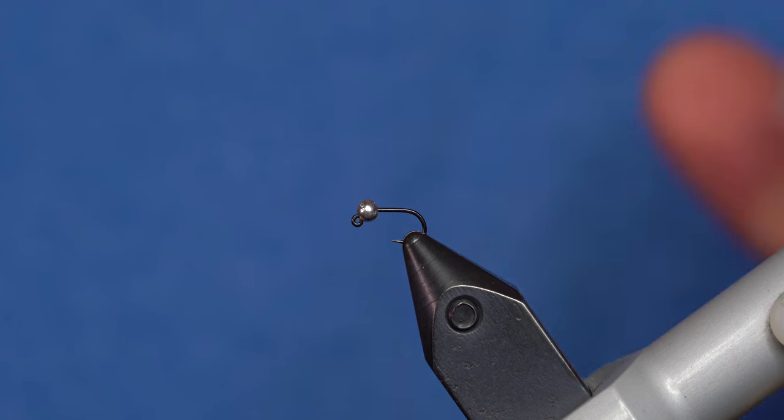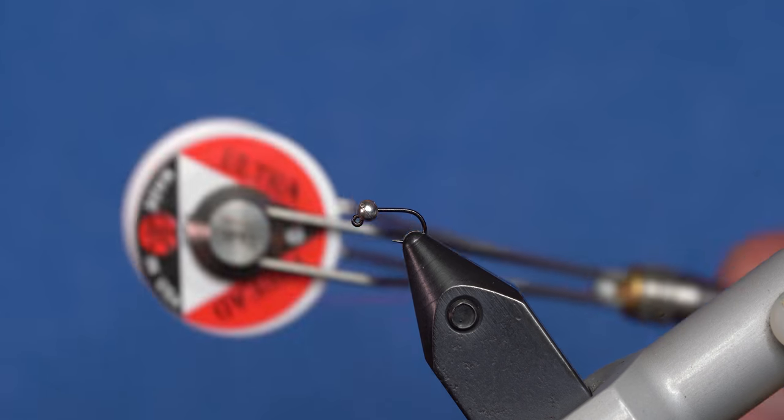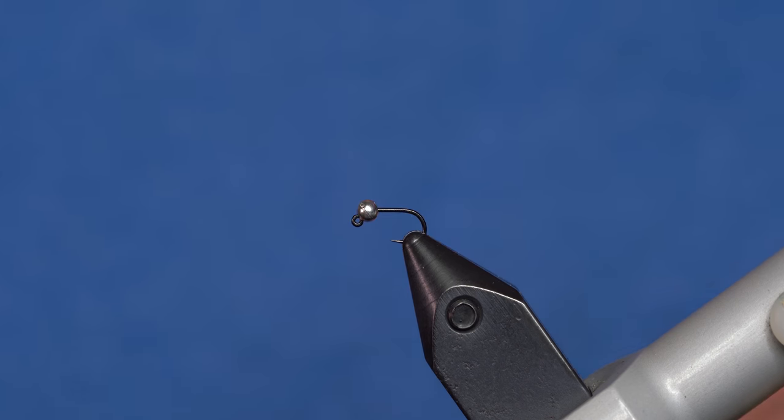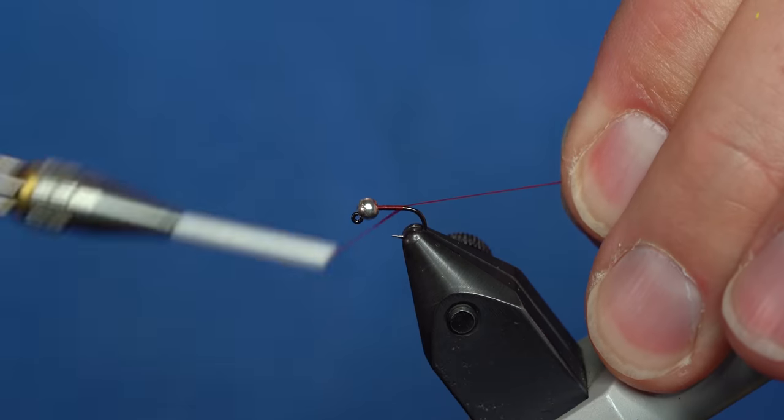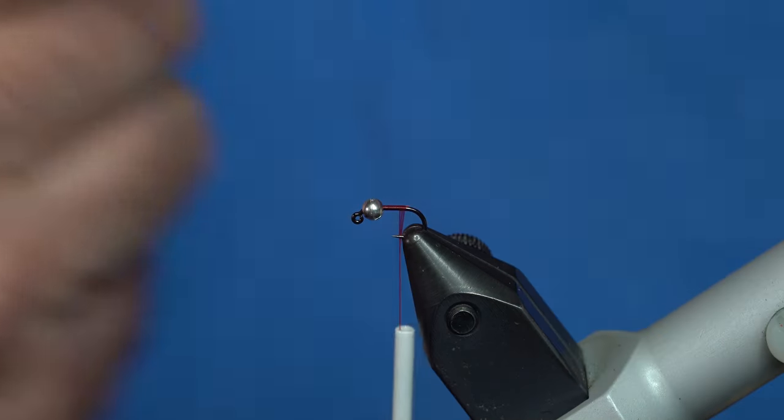You can also tie this fly in lots of sizes. I commonly tie them 14 to 20, so using bead sizes say 3.5mm through 2.0mm. Alright, we're going to tie the fly with some 70 denier red thread. I'm going to start the thread right behind the bead, wrap it back towards the bend of the hook.